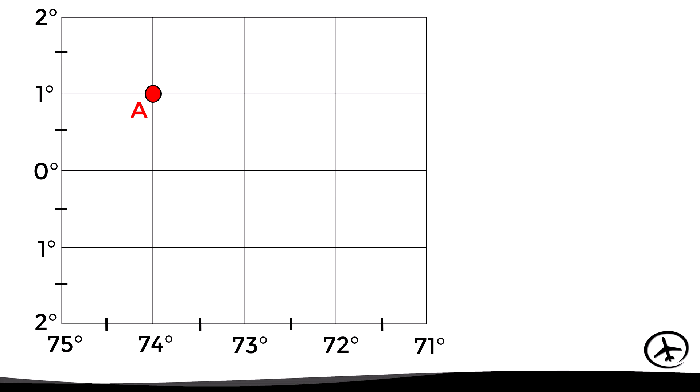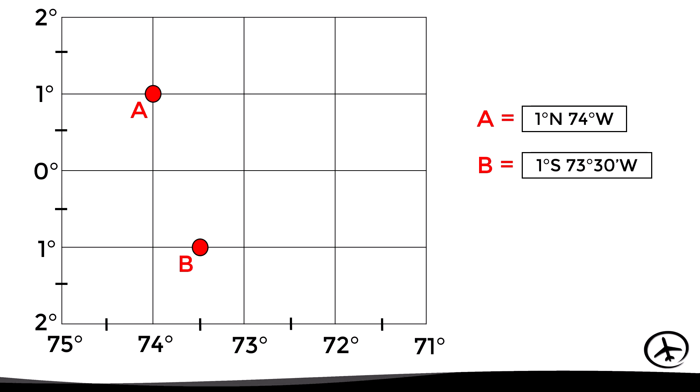If the parallels increase as we move up, the equator line is below us and we are in the northern hemisphere. In terms of longitude, point A is at 74 degrees — and since the meridians increase to the left, the prime meridian is to our right, placing us in the western hemisphere. So the coordinates of point A are 1 degree north and 74 degrees west. Point B has a latitude of 1 degree south, and its longitude is right in the middle between 73 and 74 degrees west, so using the sexagesimal system it is 73 degrees and 30 minutes west. Point C has coordinates of 0 degrees and 30 minutes south, and 72 degrees and 30 minutes west.